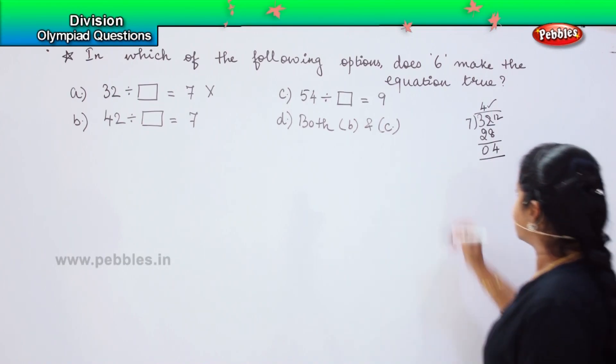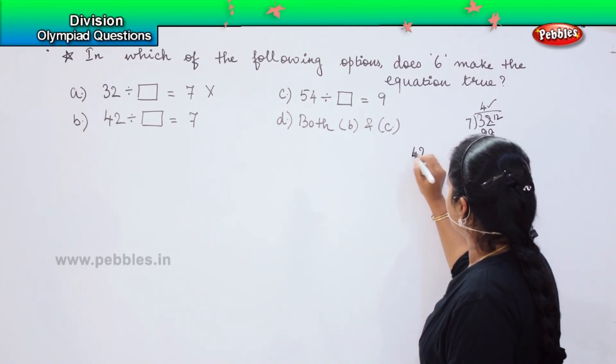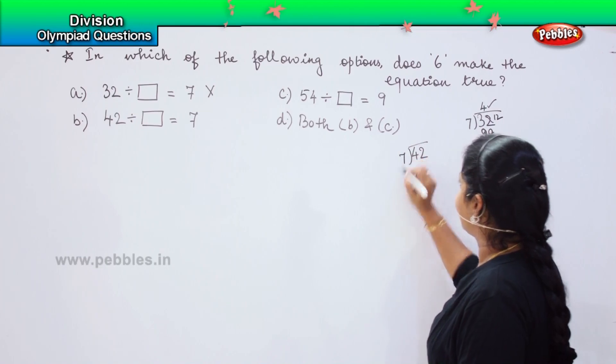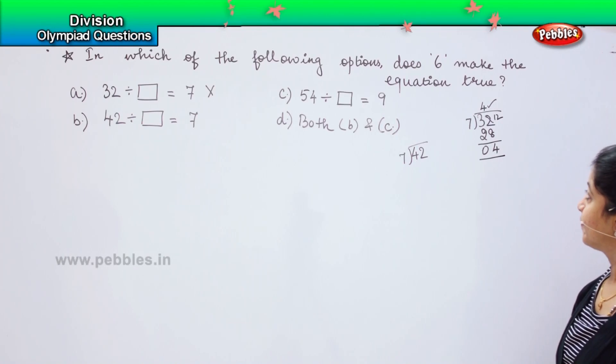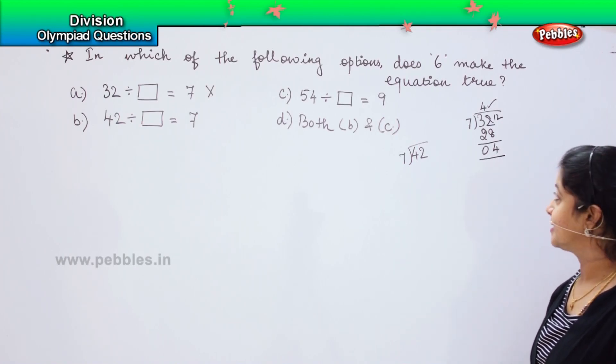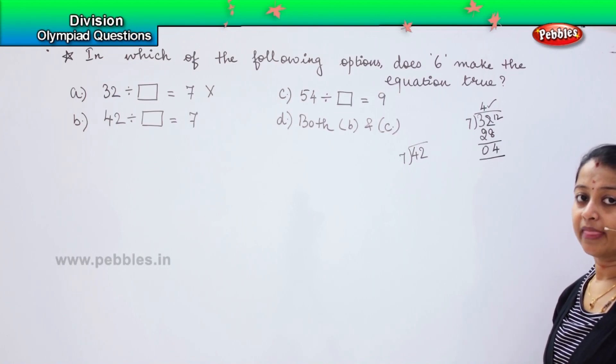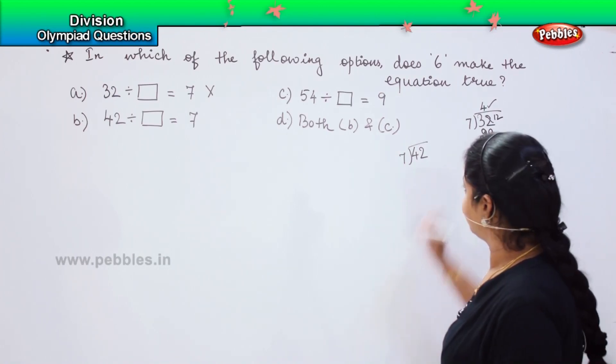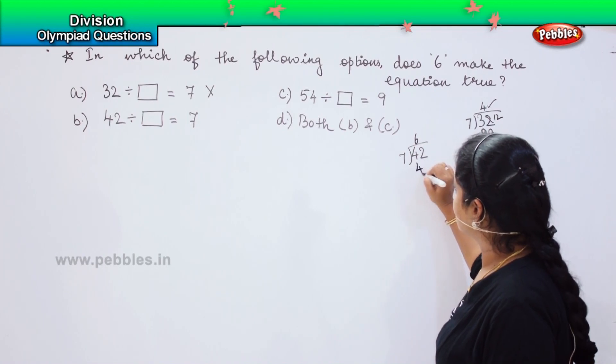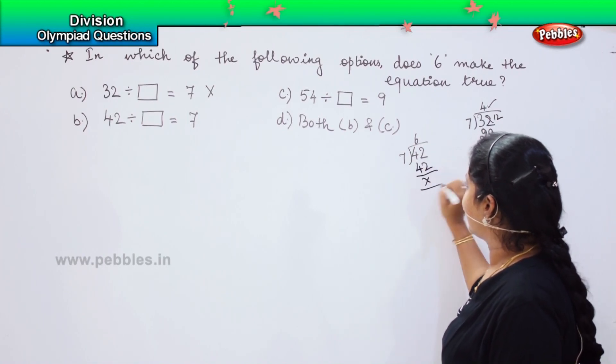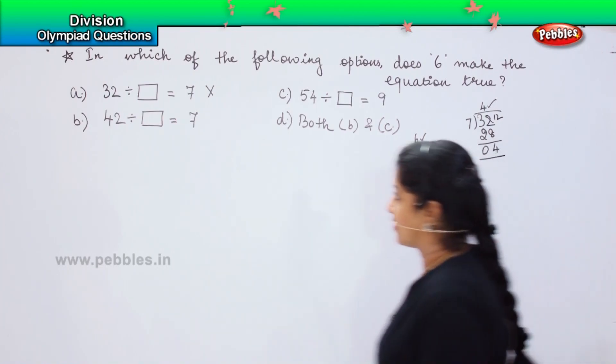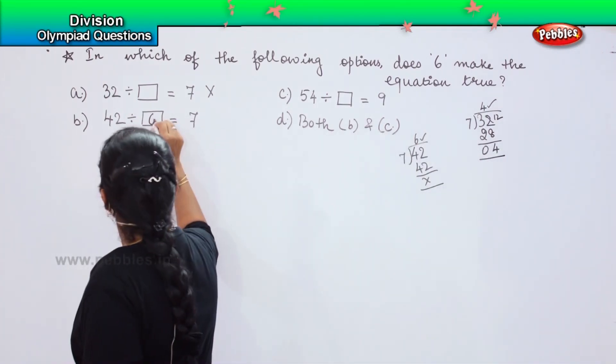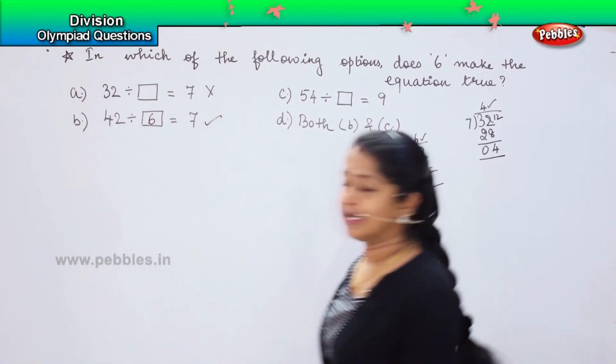Shall we try the second one? The second one says 42 divided by 7. What is the table of 7? 7, 3's are 21, 7, 4's are 28, 7, 5's are 35 and 7, 6's are 42. Here my remainder is 0 and my quotient is 6. Does it stand true? Yes. This is my right option.